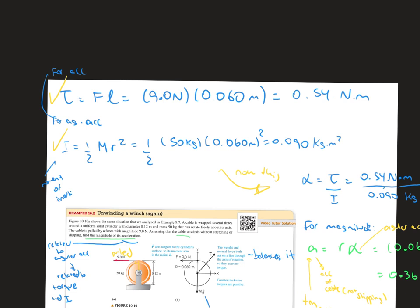For the torque, we just use the equation F times r, because we have these values. That's going to be 9 newtons times 0.060 meters, which would be 0.54 newton-meters.